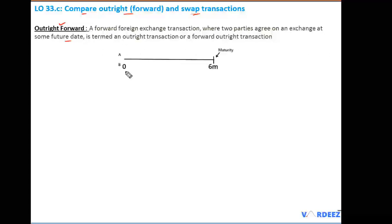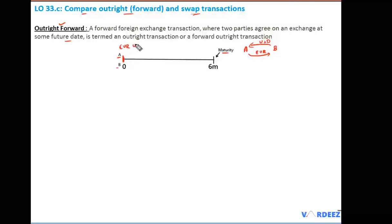For example, counterparty A and counterparty B at day zero agree to get into a forward contract in six months — that is at maturity. At maturity, B will give USD and A will give out the euros to counterparty B. This is a plain forward contract, referred to as an outright forward contract. Whatever exchange rate between the euro and USD has been agreed today, they will exchange at that rate at maturity.